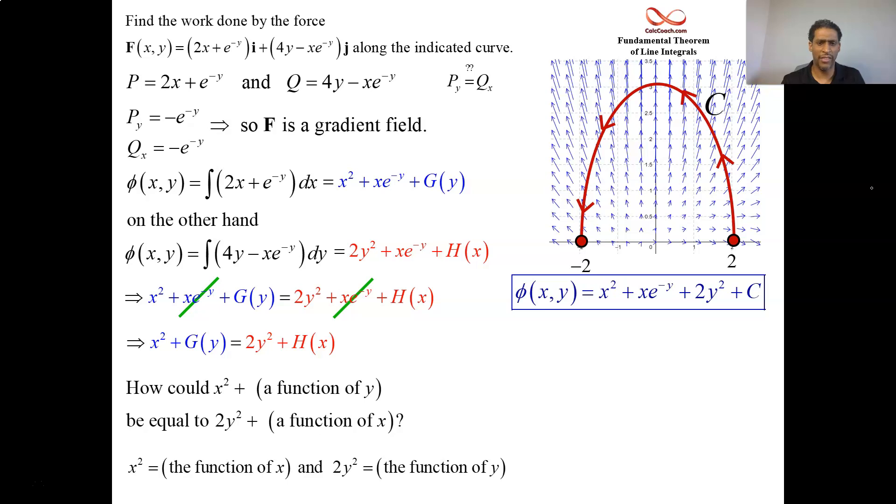As far as figuring out the line integral value, you have minus 2, 0 as your ending point, 2, 0 as your starting point. And so I'm going to get this value by just plugging it. Plugging in a negative 2 and a 0 gives you a 2. Plugging in a 2 and a 0 gives you a 6. And then subtracting these gives you a negative 4.